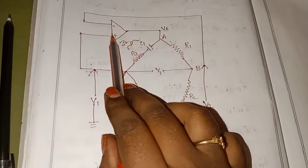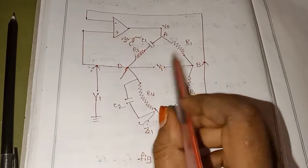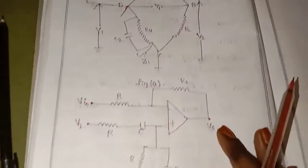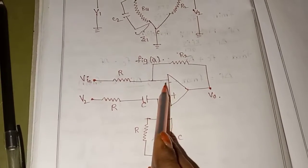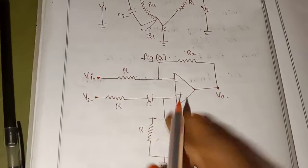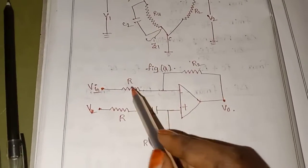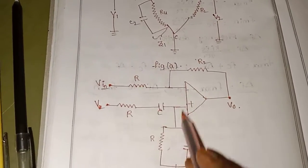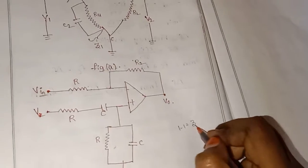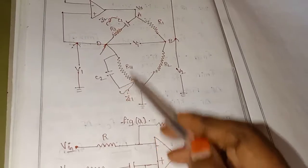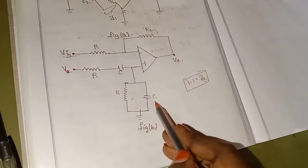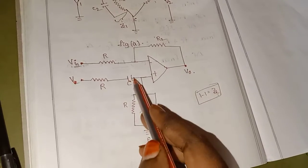One op-amp is used. This is the input for the Wien Bridge — both the inverting and non-inverting inputs. The circuit is internally connected. In the diagram, Z1 is one resistance and one capacitance, and Z2 is also one resistance and one capacitance — these are the two impedances.